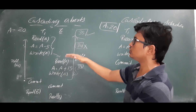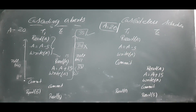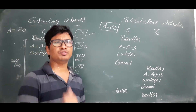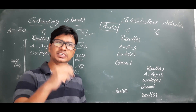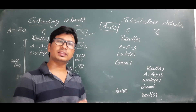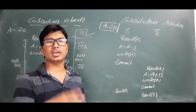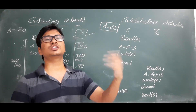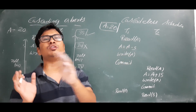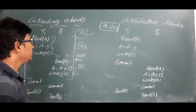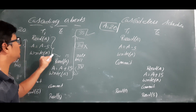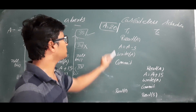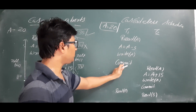Now we will discuss cascadeless schedules. Why did the cascading abort problem happen? In the analogy, suppose he had eaten the entire biscuit and then shouted — you would think he is shouting for some other reason, not because of the biscuit. Similarly, what happened here is you read a value from transaction one which was not yet complete. If a commit operation had occurred before you read, there would be no problem.